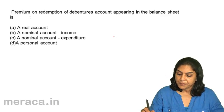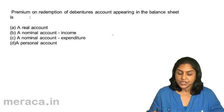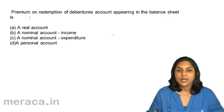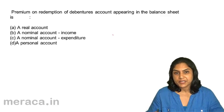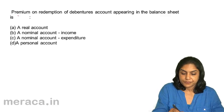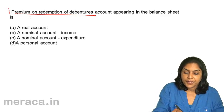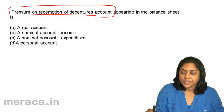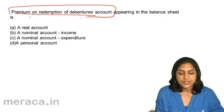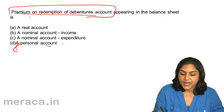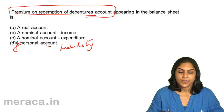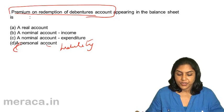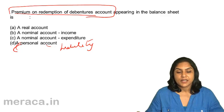Next, premium on redemption of debentures appearing in the balance sheet is: A: a real account, B: a nominal account income, C: a nominal account expenditure, or D: a personal account. Premium on redemption of debentures account is a personal account — it is a liability account. Therefore, the correct answer is D: a personal account.